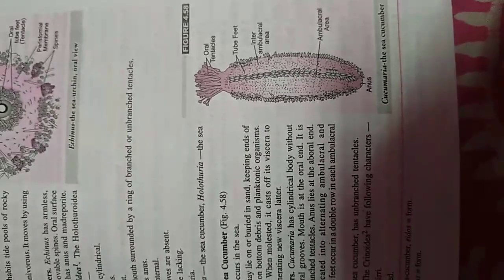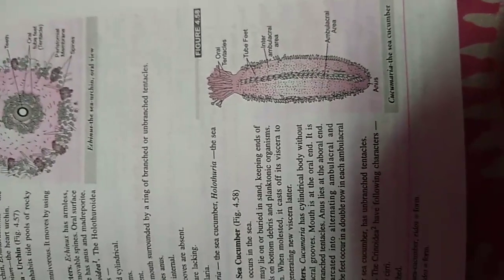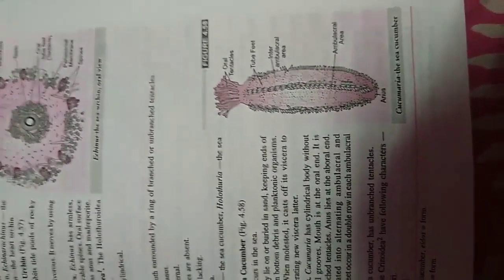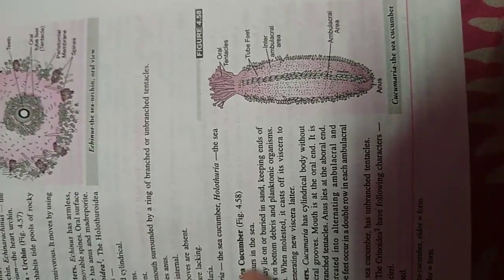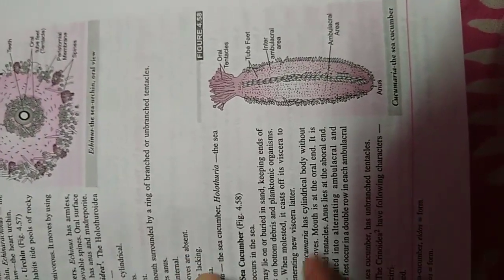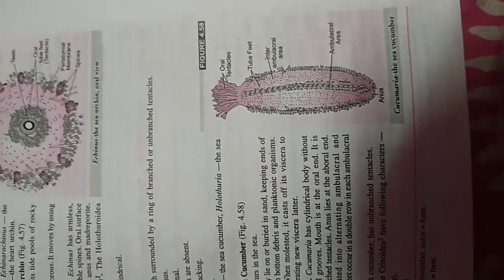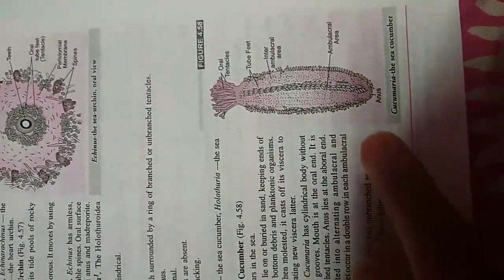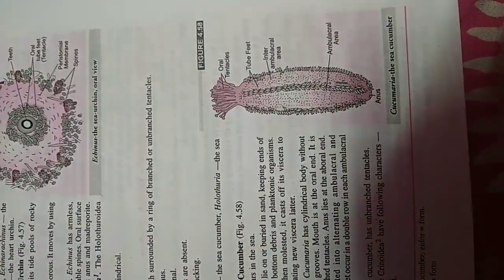Now we are discussing about the fourth class, Holothuroidea. Body is long and cylindrical. There are no arms. Spines are absent. Oral end is surrounded by a ring of branched or unbranched tentacles. Aboral end carries the anus. Ambulacral grooves are absent. Pedicellariae are lacking. Larva is auricularia. Sea cucumber is the great example of this class.